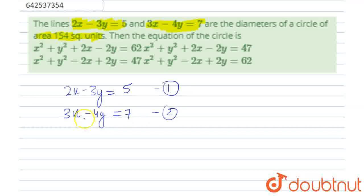And as we know, both are the diameters of the same circle. So, the value of x and y will be the center of the circle. For example, let's say there are two diameters of the same circle like this. The common center will be common for both of them.